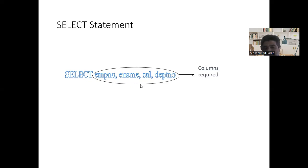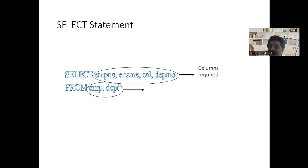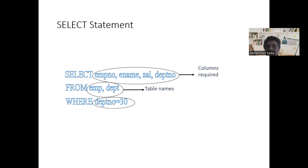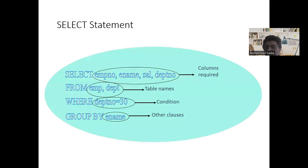The SELECT statement has a standard structure. It always starts with the keyword SELECT, followed by the list of columns. If you want all columns, use a star (*); for selected columns, specify the column names. That is followed by FROM and the table name: SELECT column_names FROM table_name. We can also use optional clauses like WHERE, GROUP BY, HAVING, and ORDER BY for filtering, grouping, and sorting.